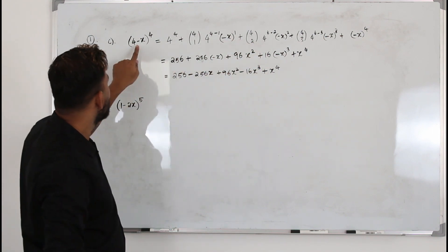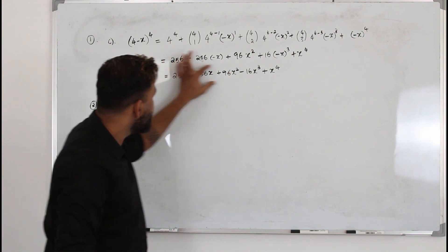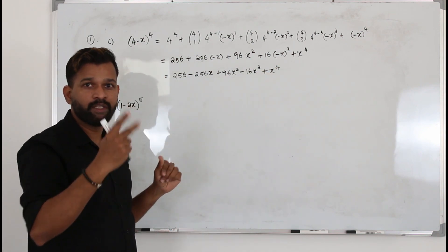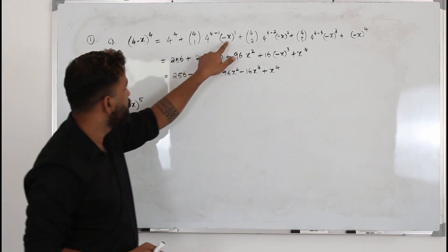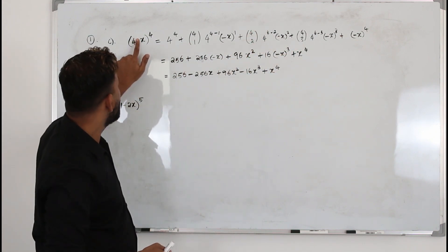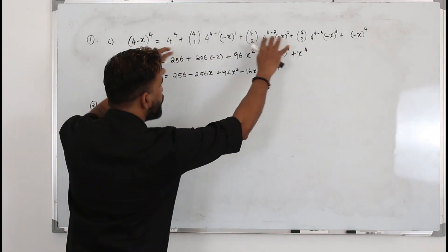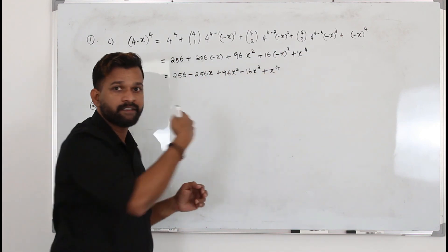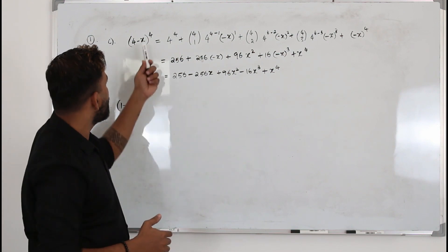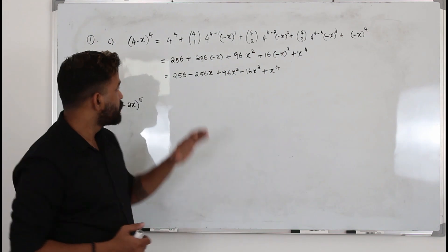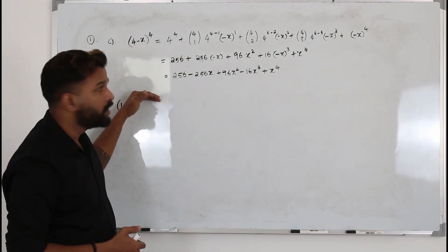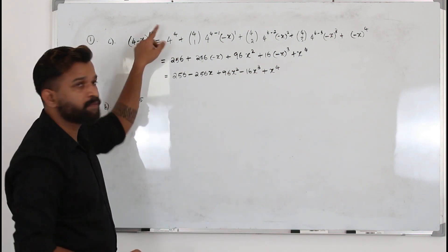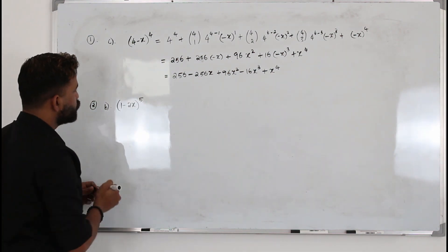There's an important point about signs. When you have a plus between terms, all terms in the expansion are positive. When you have a minus, you can either take the second term together with the minus sign, or take just x as the second term and then write alternating signs: plus, minus, plus, minus. Both methods are valid. For (4+x)⁴, the expansion is the same but all terms are positive.